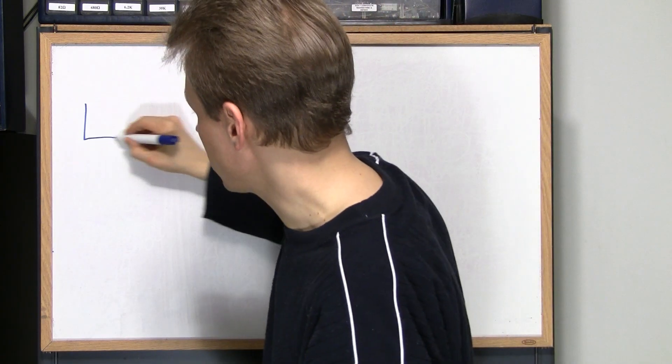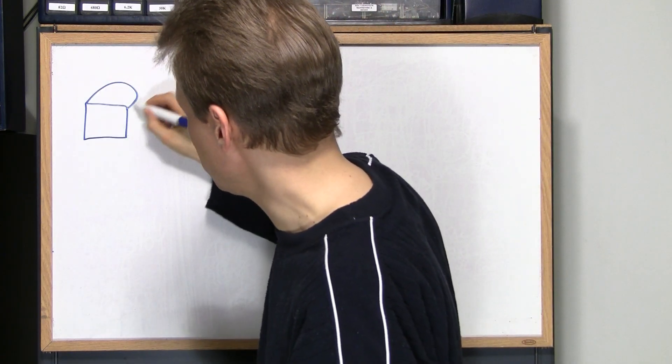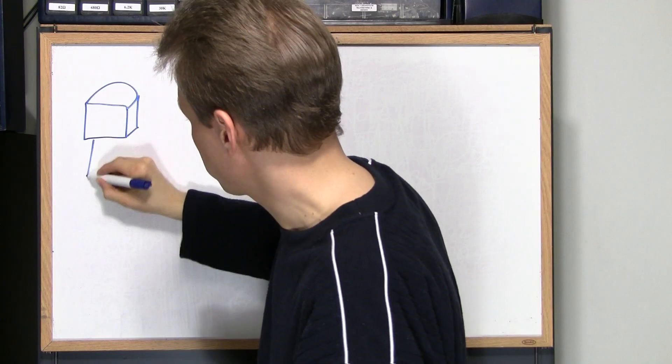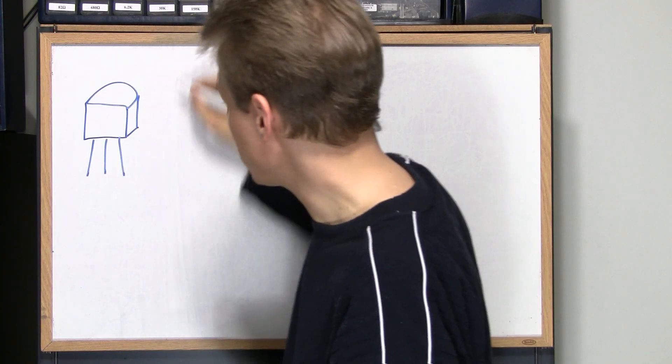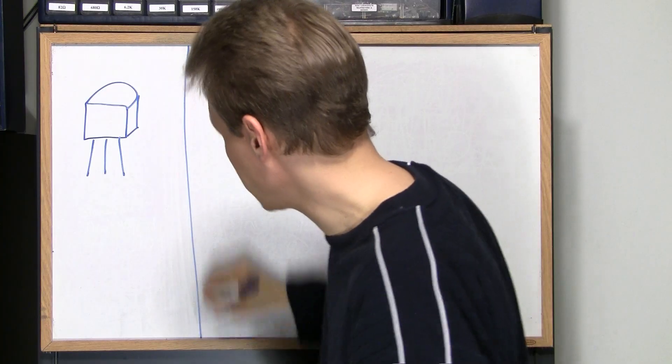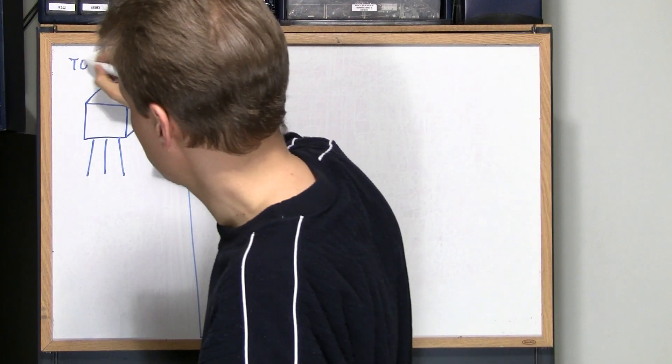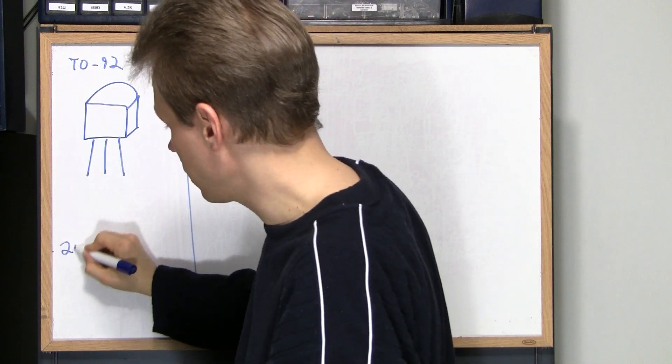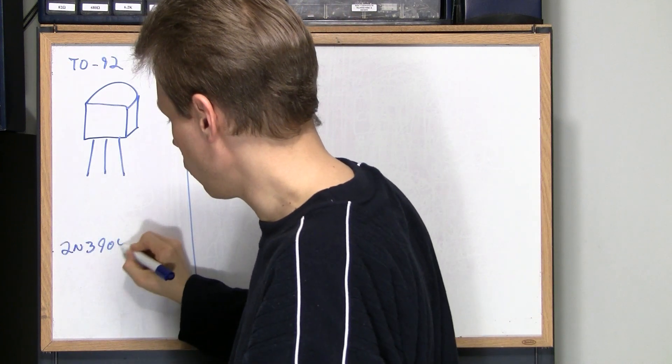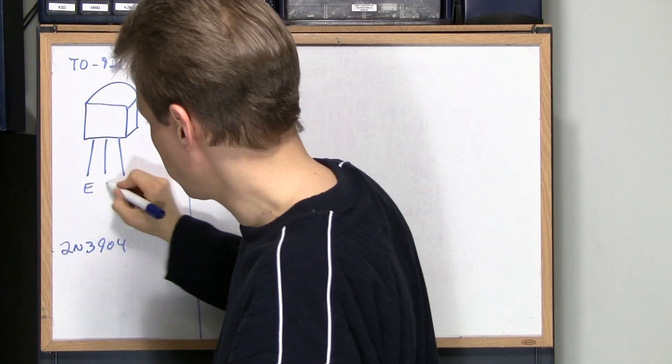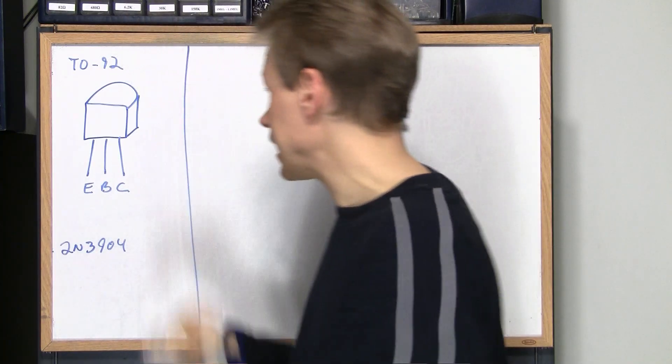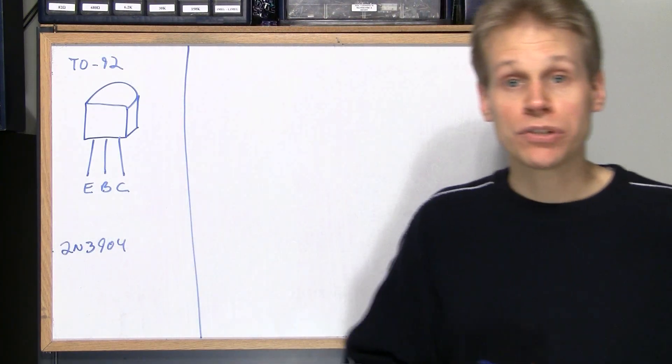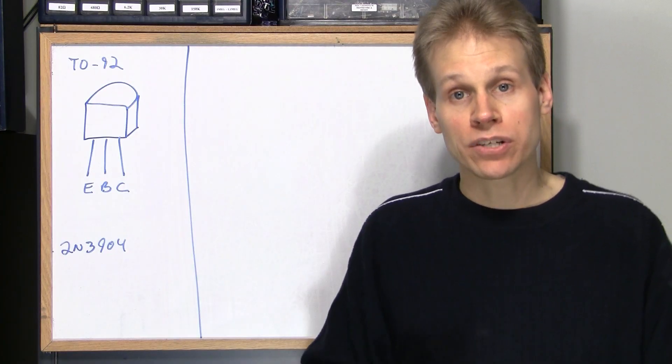So we recognize this transistor here, all of us have seen these. This transistor here is a TO-92 package. That's the package of the transistor and if this is a 2N3904 this is going to be Emitter Base Collector and that's how it goes for all of the 2N series small package transistors.